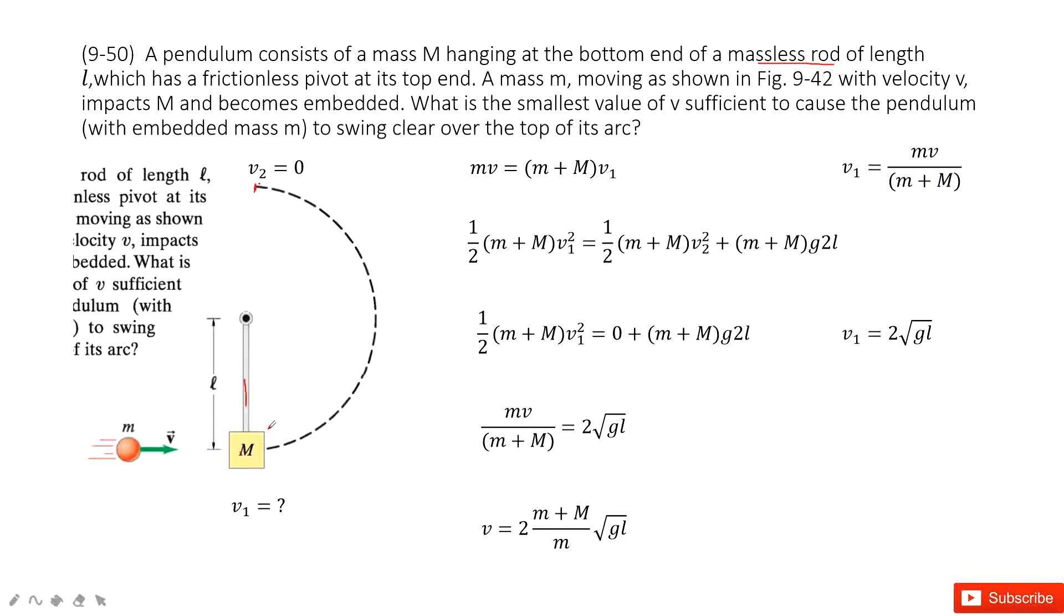So we can consider when this box and the bullet moves there at the peak, the smallest velocity for them can be zero. Because this is not a string, this is a massless rod. So that means the box and the bullet can just sit there. So we can consider v2 equals to zero.